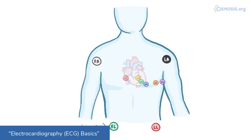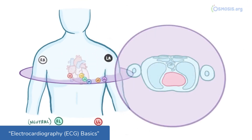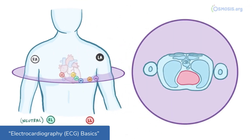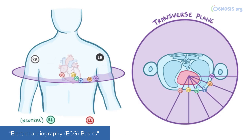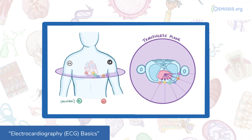Now, the heart's a three-dimensional organ, right? So V1 through V6 line up in the transverse or horizontal plane of the heart, and each electrode is set up to detect any wave of positive charge coming toward them.